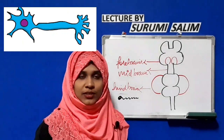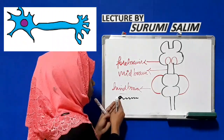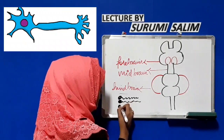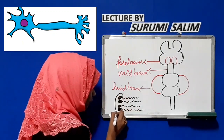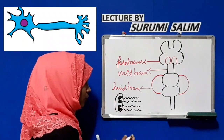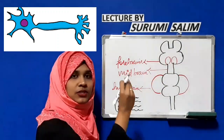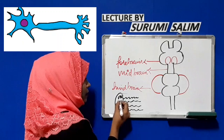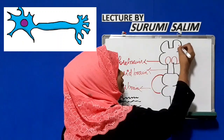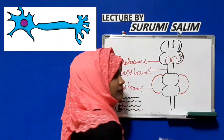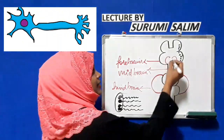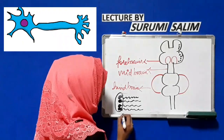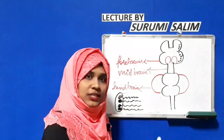A neuron consists of a head portion called the cell body and a tail portion called the axon. When cell bodies of neurons are grouped together in a particular region of the central nervous system, they are called the nuclei or nucleus — this is also called the gray matter. Cell bodies grouped in the peripheral nervous system are called ganglia. The axons grouped together form the white matter.